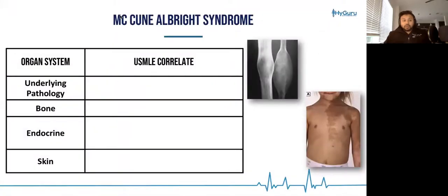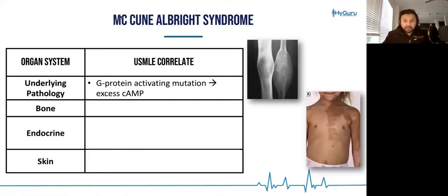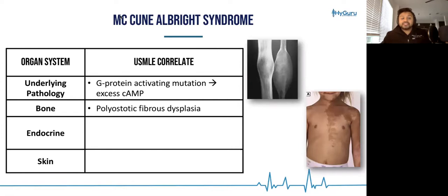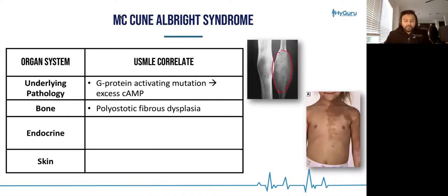So McCune-Albright syndrome — we need to understand that the underlying pathology is a GS activating mutation. You get excess cyclic AMP. That causes this bone issue — fibrous dysplasia — with a ground glass appearance of the bone that is then going to be very prone to fracture.